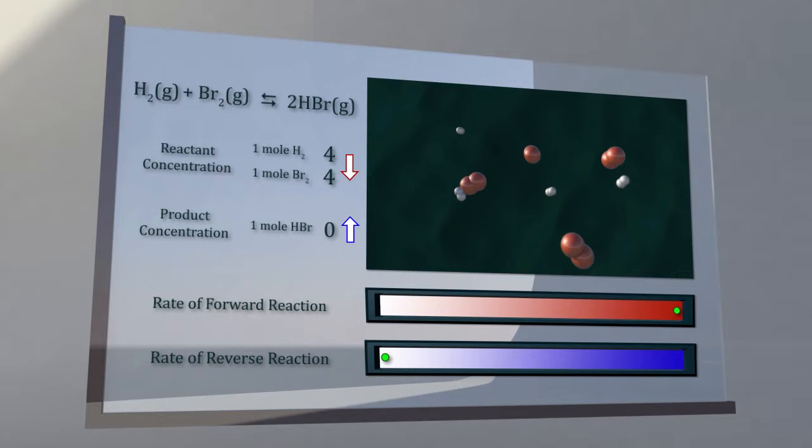As the concentration of reactants decreases, the rate of the forward reaction decreases.